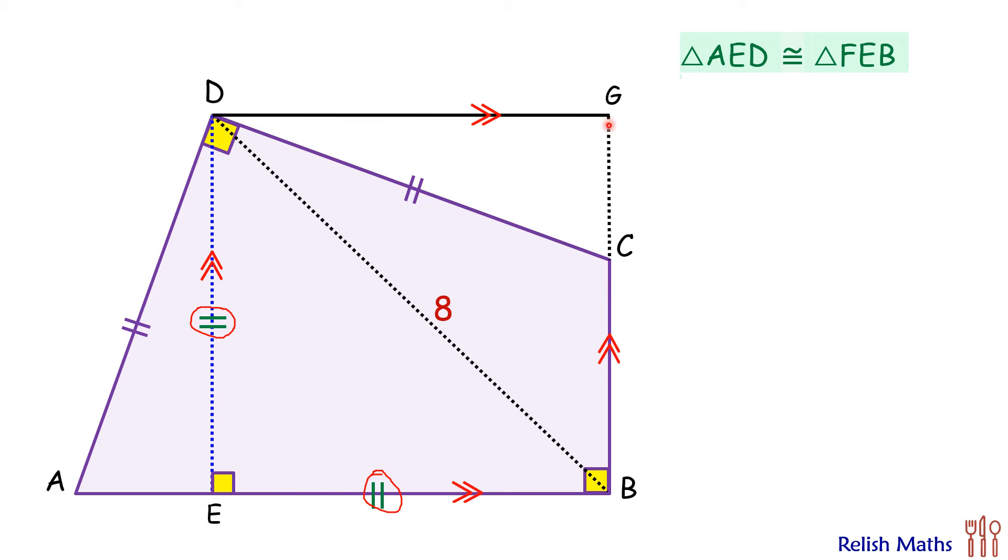Let's join CG first. So here this figure EBGD, this is a parallelogram, and thus opposite angles are equal. So angle G is 90 degrees. Now here opposite sides are also equal. So we can say EB and DG, they are equal to each other.